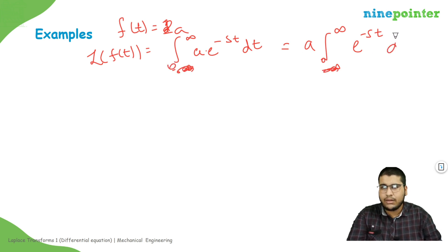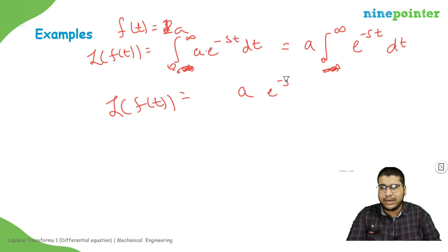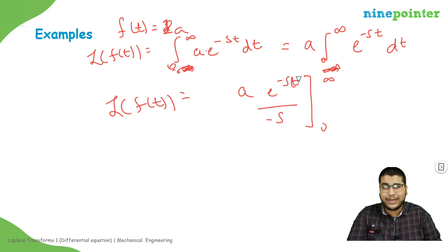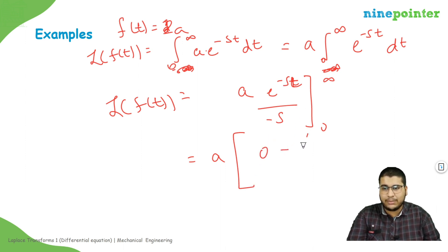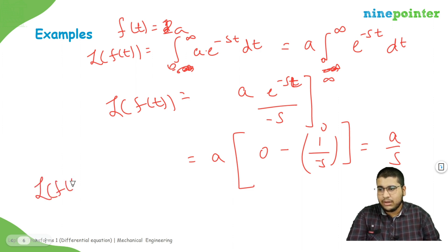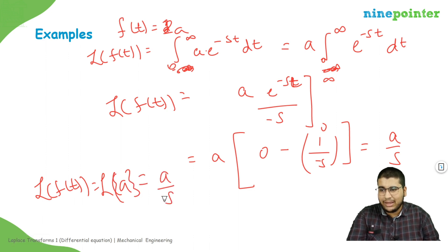The Laplace transform becomes a times the integral of e to the minus st dt from zero to infinity, which evaluates to e to the minus st over minus s. Note that the integration is with respect to t, not s. Plugging in the limits: at infinity the term goes to zero, and at zero it becomes one. So the result is a times one over s, giving us a over s. The Laplace transform of a constant a is simply a over s.